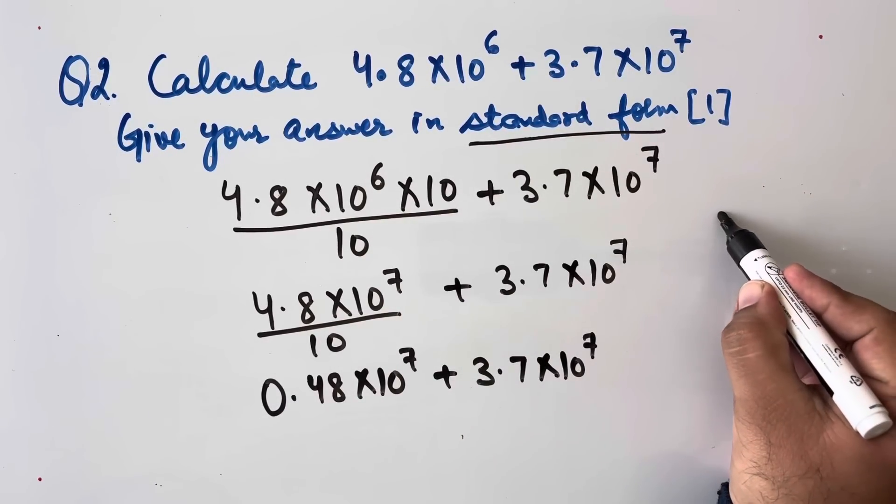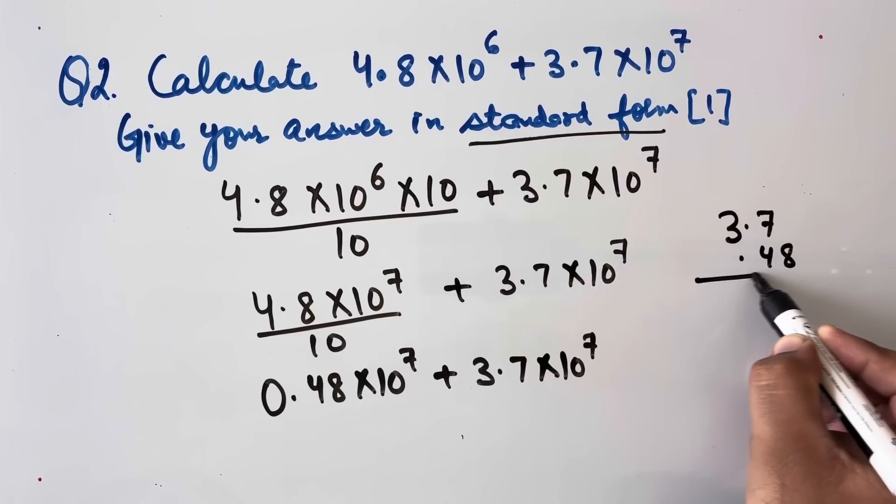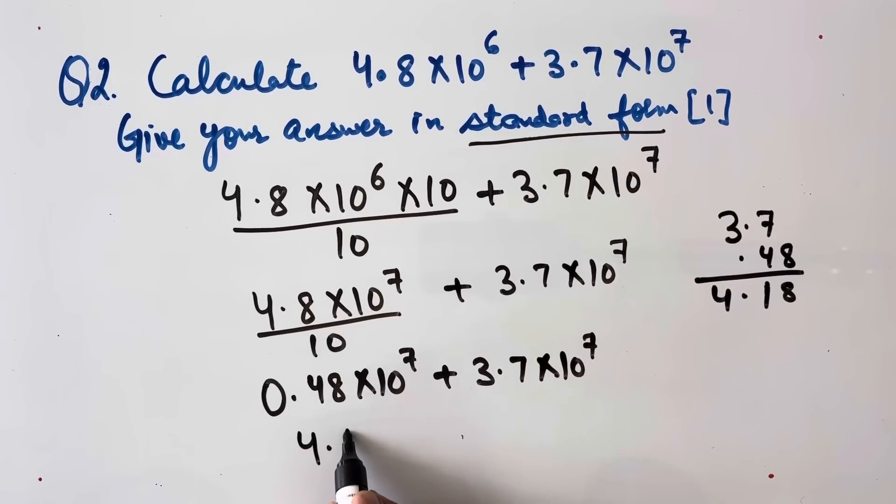Now we will be adding this 3.7 plus 0.48. We get 4.18 × 10^7. This is our answer and this is in standard form.